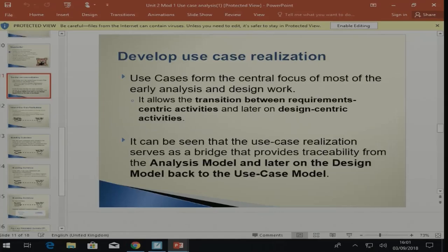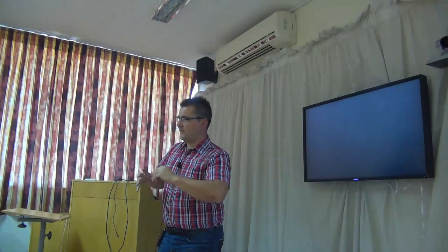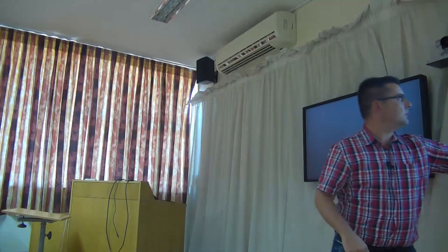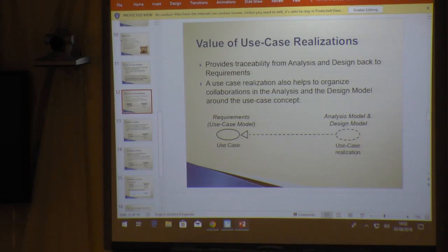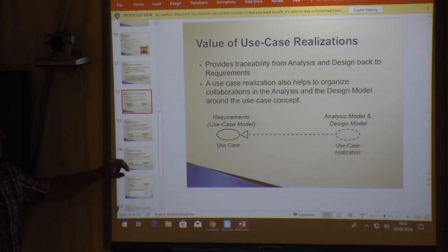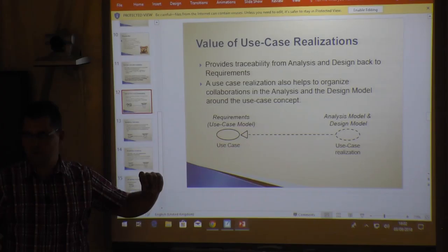This means we are transitioning from requirements to analysis, and it really performs as a bridge. It allows us to trace back the classes and our behavior to our actual requirements, so you don't come up with something which is not required. It's there for traceability from your analysis and design section to your initial requirements and initial documentation. It helps us organize our collaborations in the analysis and design model around our use case — these classes ultimately allow me to perform the behavior for a specific use case.